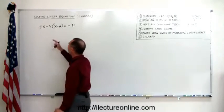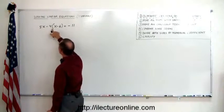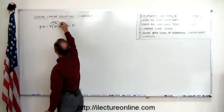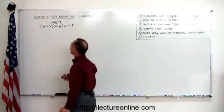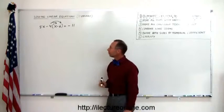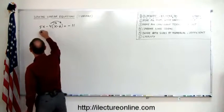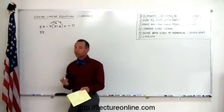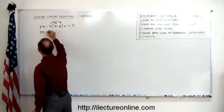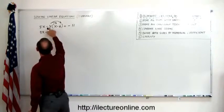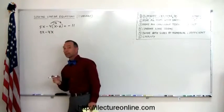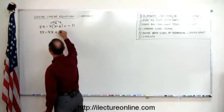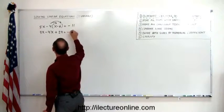Typically what that means is we have a number multiplied with everything inside of parentheses. That means we need to distribute the negative 4 over the x and the minus 6. So, we have 5x, minus 4 times x is minus 4x. Minus 4 times a minus 6, when we multiply a negative times a negative, we get a positive. So that's a positive 24 equals minus 11.